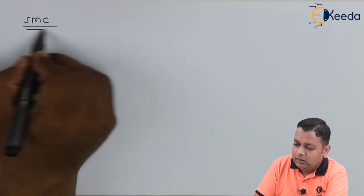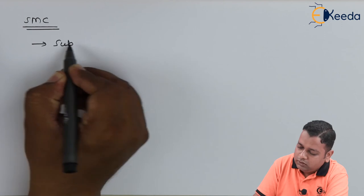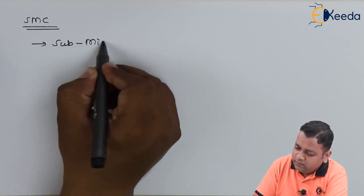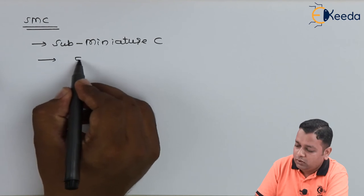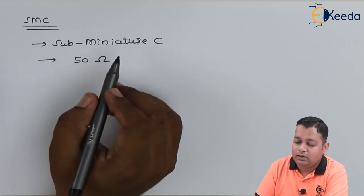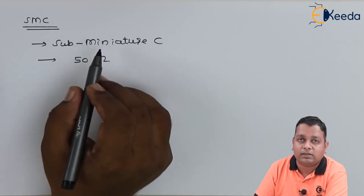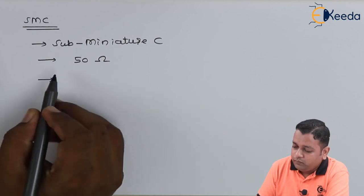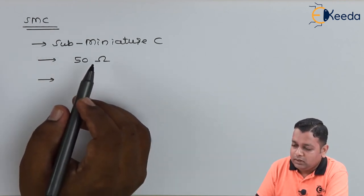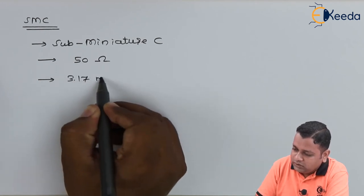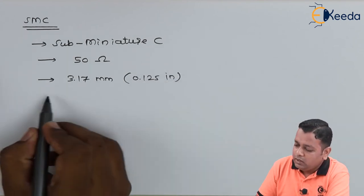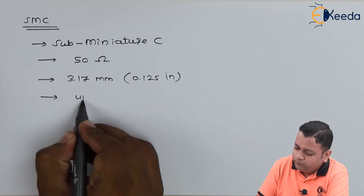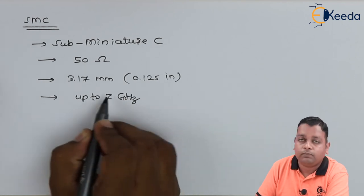The next type of connector is abbreviated as SMC, which stands for Sub-Miniature C. It has a characteristic impedance of 50 ohms and in dimension it is smaller than the earlier SMA connector. This microwave coaxial connector has a diameter of up to 3.17 millimeters or 0.125 inches, and the operative frequency range is up to 7 gigahertz.